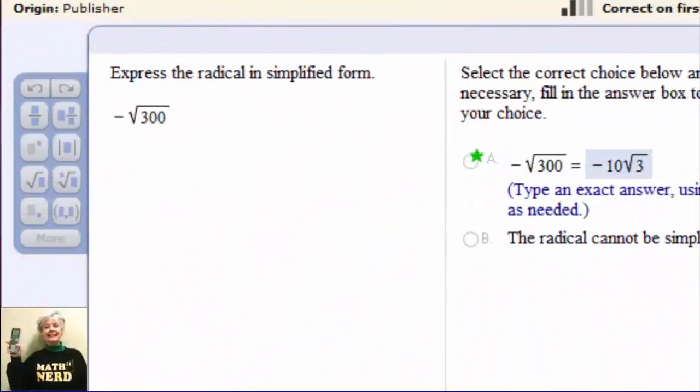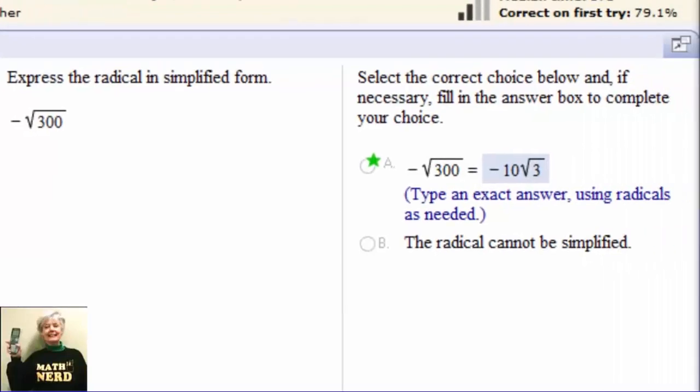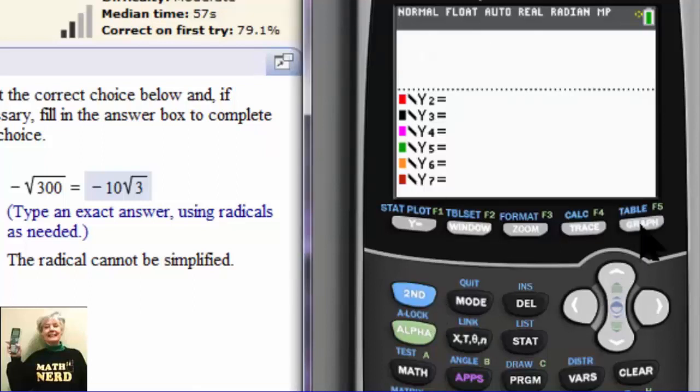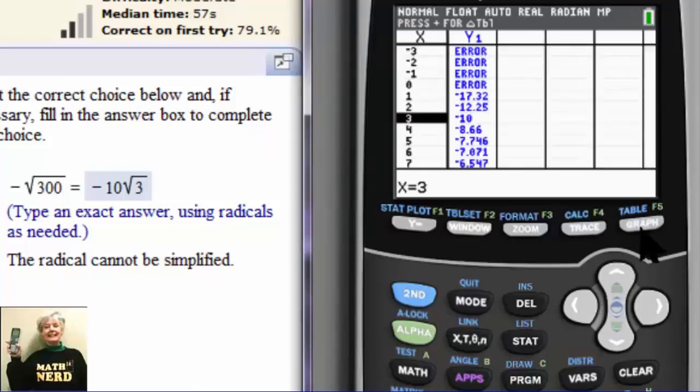Now we're going to take negative the square root of 300, so I put that in the calculator: negative the square root of 300 divided by x. Then I go to second graph, and voila, there is my answer: negative 10.